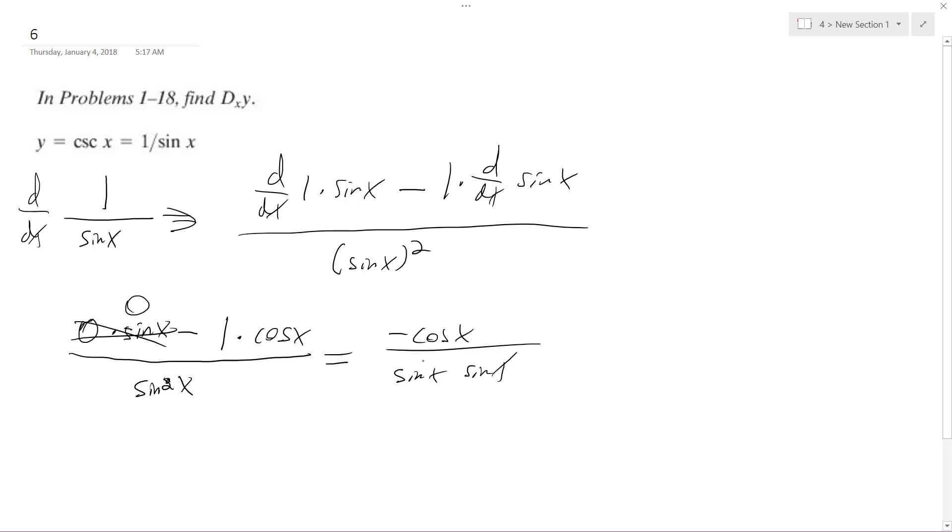And then what happens here is, 1 over sine x is cosecant. This is the same thing as negative cotangent, so what I get is negative cotangent x times 1 over sine x, which is the cosecant x.